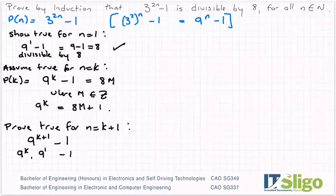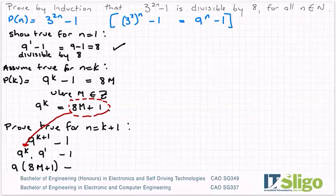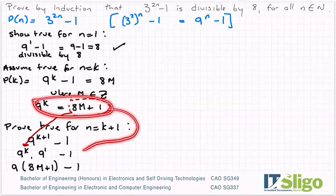And then 9^k - this is why I wrote it like this. I'm going to sub that in here for my 9^k. I'm going to bring this 9 to the front so that I end up with 9(8m + 1) - 1. So just like with any proof by induction, we go back to what we assumed true for n = k and we use it to help us prove the case where n = k+1.